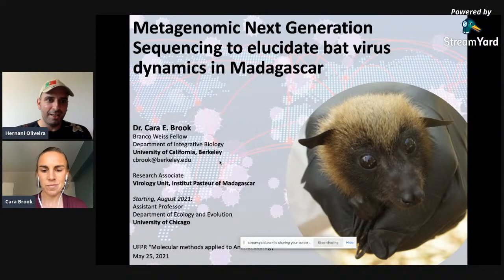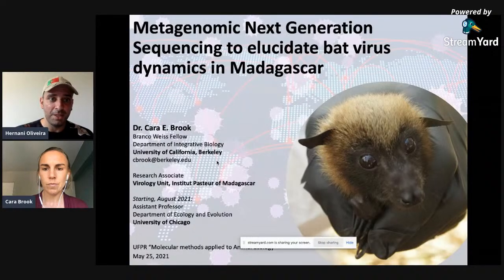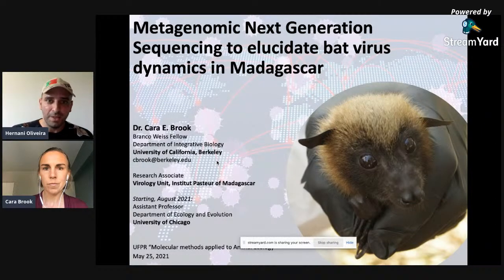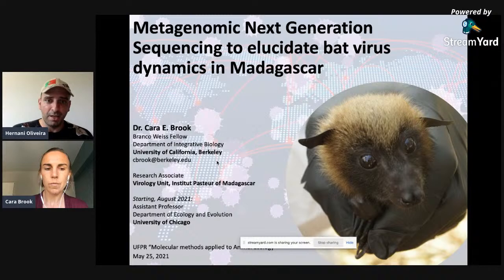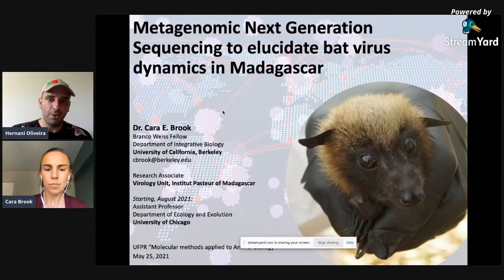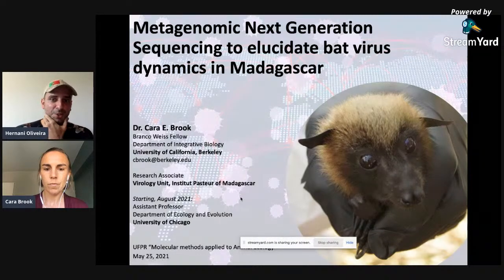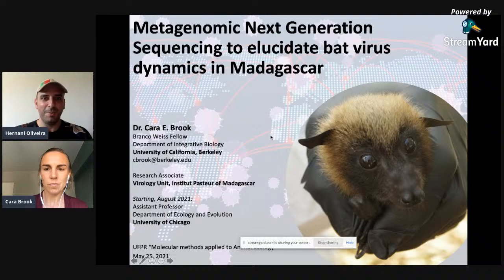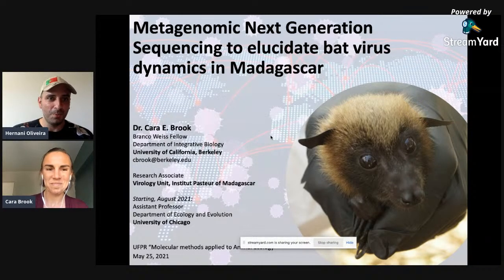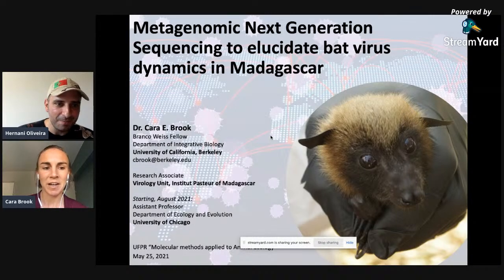Hello everyone, we're live from the course on molecular methods applied to animal ecology. The speaker today is Dr. Cara Brook from the University of Chicago, an assistant professor in the Department of Ecology and Evolution. She received her PhD in ecology and evolutionary biology from Princeton University in 2017, then served as a Miller Postdoctoral Fellow and a Branco Weiss Society Science Fellow at UC Berkeley.